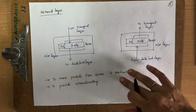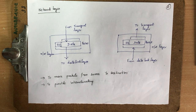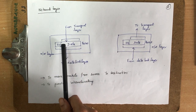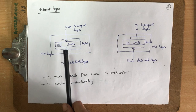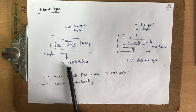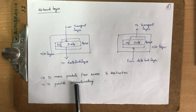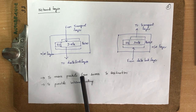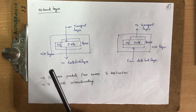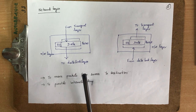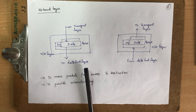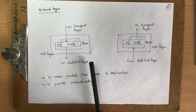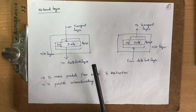The network layer handles data in the form of packets. Data from the transport layer is converted into a packet, a header is added, and it is sent to the next lower layer. This layer provides internetworking and ensures that all routing information is present, managing the routing of all packets from source to destination.